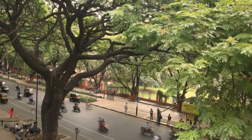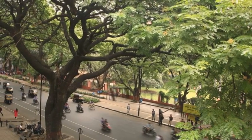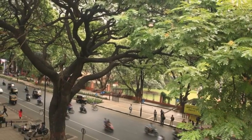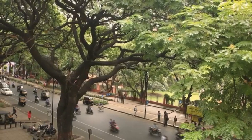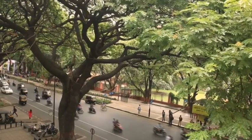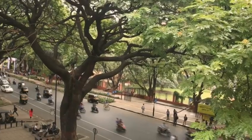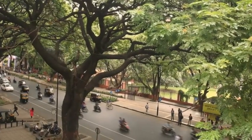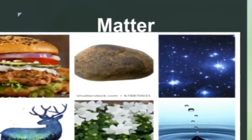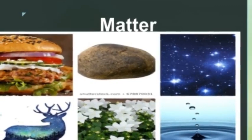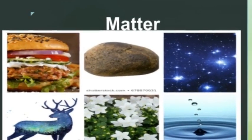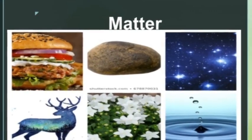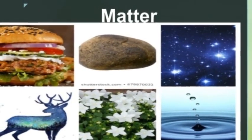When we look at our surroundings, we can see different things with different shapes, sizes, and textures. Everything in this universe is made up of materials which scientists have called matter. That is, the air we breathe, the food we eat, stones, clouds, stars, animals, plants, and even a small drop of water is known as matter.